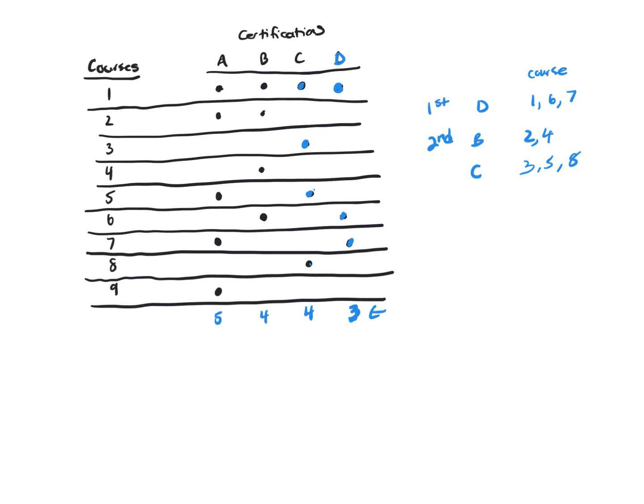Okay, let's look at A. All right, so let's cross out C because she's not certified in C.